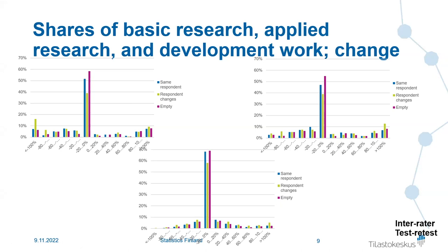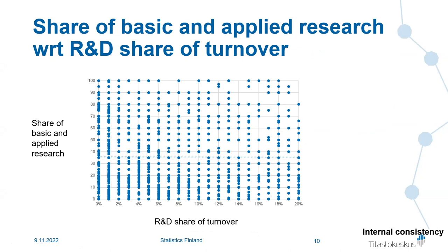Relating to the nature of R&D work — basic, applied, or development — I had a hypothesis that if a company spends a bigger share of its turnover on R&D, say 20 percent of revenue, it would be more likely to do basic and applied research. Whereas if a company spends only one or two percent of revenue on R&D, it would probably just do development work.